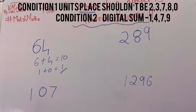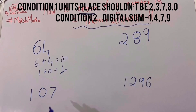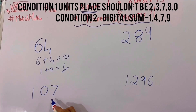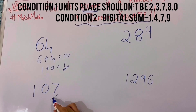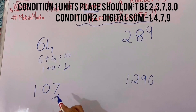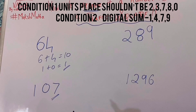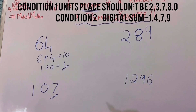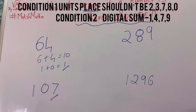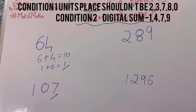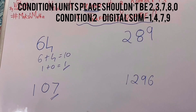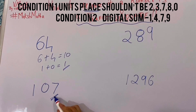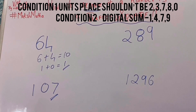Now 107. You can see that the number at the unit's place is 7, and it means that it is not a perfect square number. The unit's place shouldn't be 7, 8, 2, or 3.